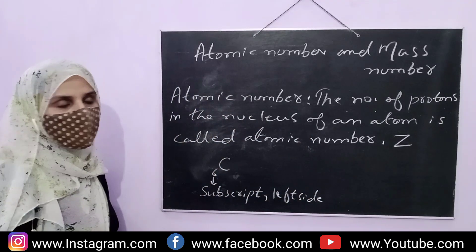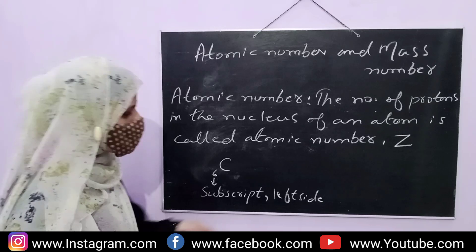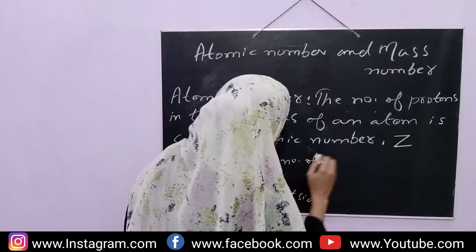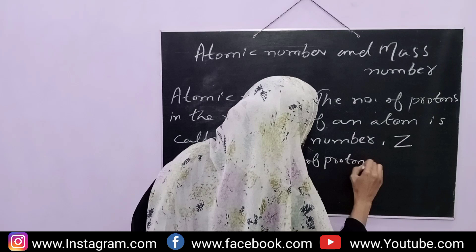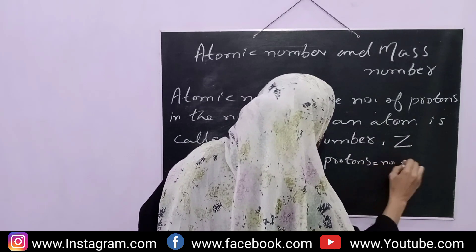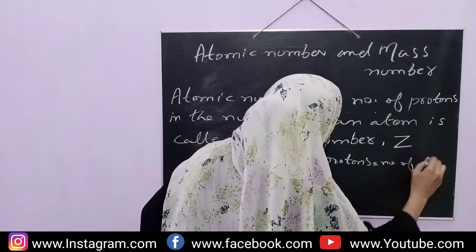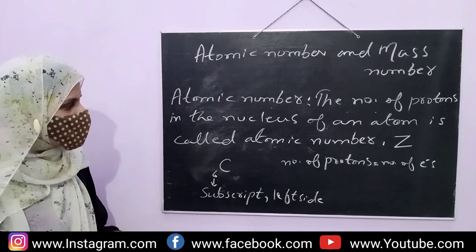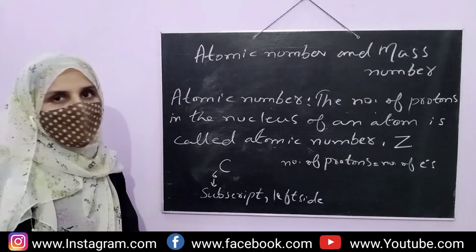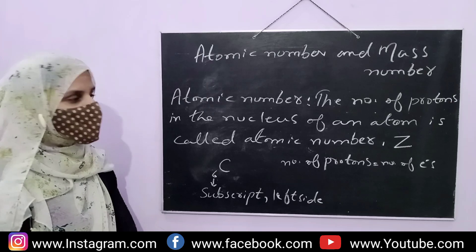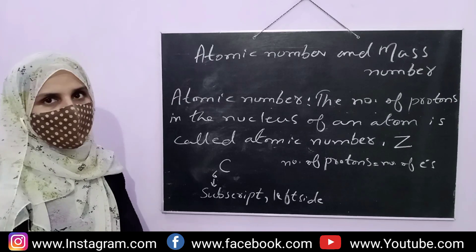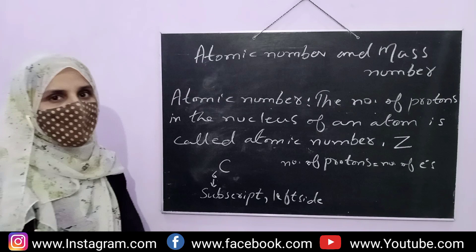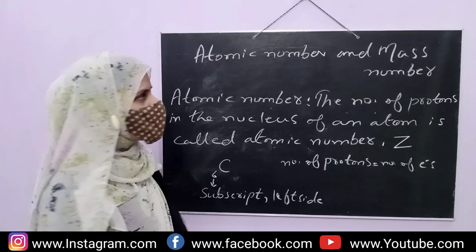What happens in neutral atoms? If an atom is neutral, then the number of protons and the number of electrons are equal. So we can also say that atomic number is the total number of electrons around the nucleus in neutral atoms.